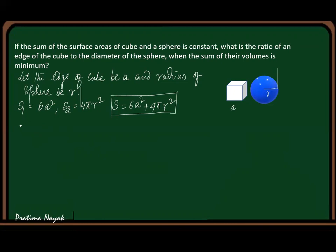Next is volume. Volume of the cube is A³ and volume of the sphere is (4/3)πR³. Total volume V = A³ + (4/3)πR³, and this is to be minimum.